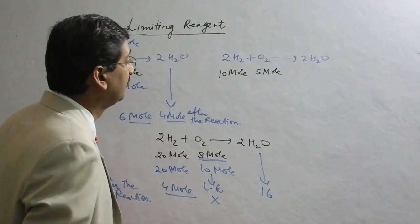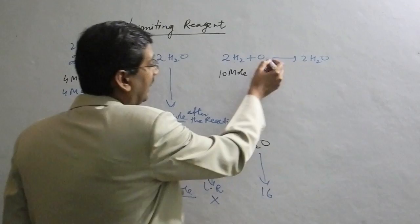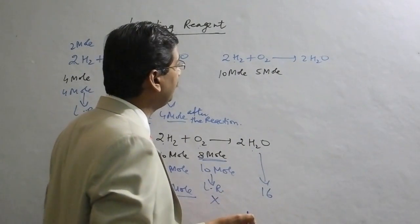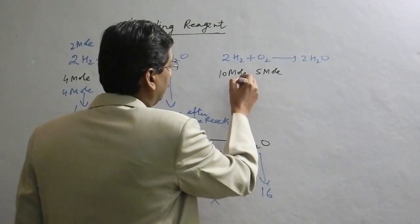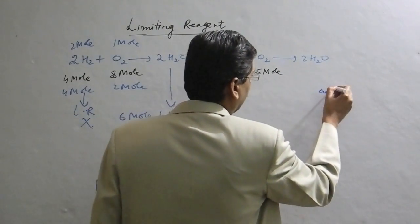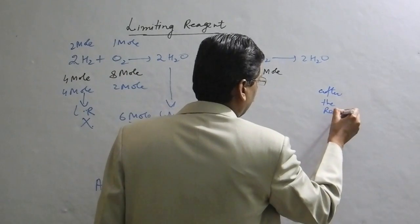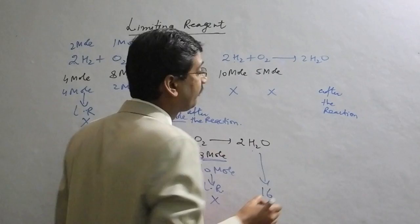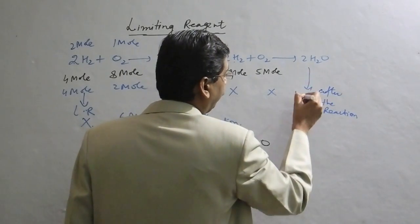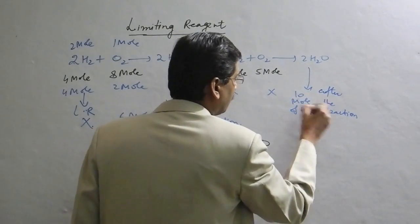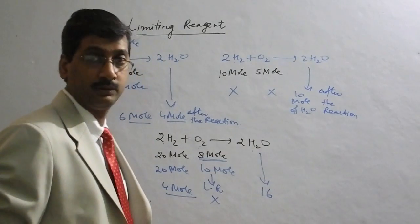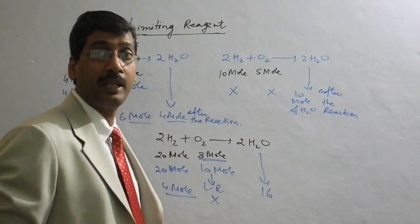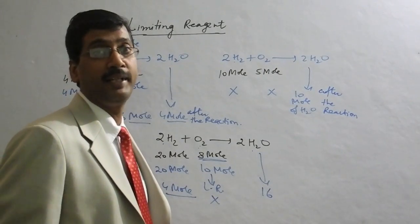In the third case we have 10 mol of H2 and 5 mol of O2. Since 2 mol H2 reacts with 1 mol O2, 10 mol H2 reacts with exactly 5 mol O2. Both are in the limiting ratio — both substances are completely consumed. After the reaction, neither H2 nor O2 remains, and 10 mol of H2O is formed. There is no single limiting reagent; both are limiting reagents.